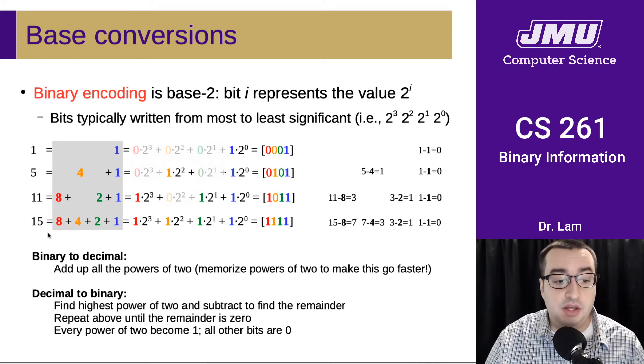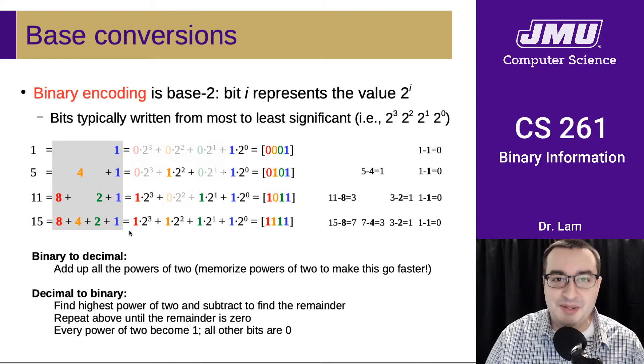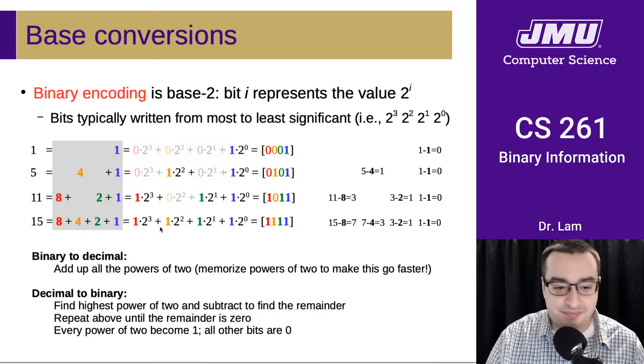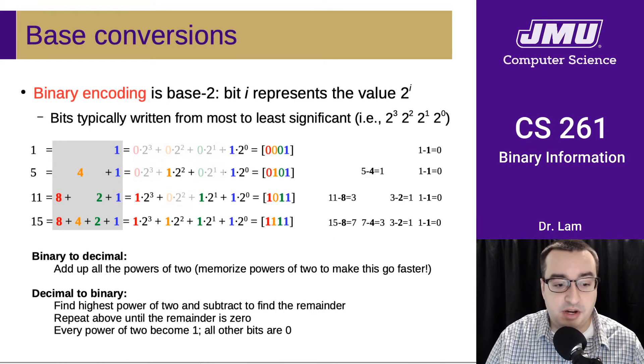In this case, we have 1 of each power of 2. This is interesting because that adds up to the number that is 1 less than the next power of 2, which, if you think about it, is what you should expect here.